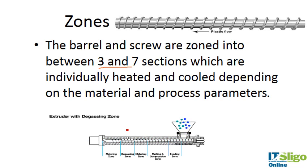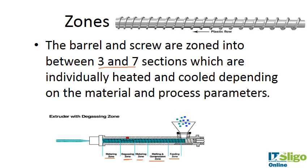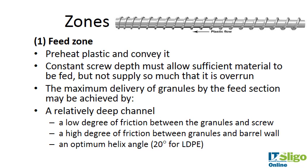The barrel and screw are zoned into between three and seven sections, each of which may be individually heated and cooled. In addition to the feeding zone, compression zone, and metering zone discussed in injection molding, there may also be a degassing zone which allows volatiles to escape, followed by a final metering zone. The feed zone preheats and conveys the plastic along. A constant screw depth allows sufficient material to be fed, and maximum delivery is achieved by having a relatively deep channel, low friction between granules and the screw, and high friction between granules and the barrel wall.